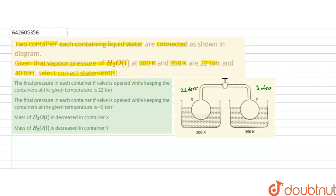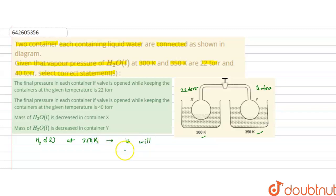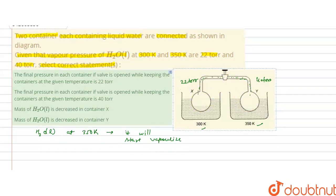We have to find out the current state. When the two containers — one at 350 kelvin and the other at 300 kelvin — are connected, the water at the higher temperature will tend to vaporize. H₂O liquid at 350 kelvin will start to vaporize because the temperature is higher. When the valve is opened, the vapors will go from the container at higher temperature to the lower temperature — that is, from 350 kelvin to 300 kelvin.